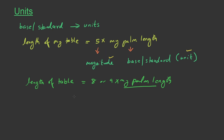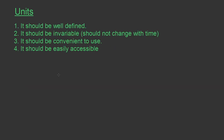For that, the standard or base for a unit should follow some characteristics. The standard for a unit should have four characteristics. They are: one, it should be well defined, that is, defined very clearly; second, it should be invariable, meaning it should not change with time; third, it should be convenient to use — a unit must be convenient to use in different places and should be easily accessible.